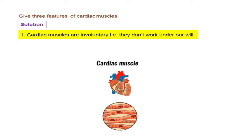Now the functions or the features of the cardiac muscles are that they are involuntary. What does involuntary mean? That they do not work under our will. We cannot control when they are going to contract, when they are going to relax. So they are involuntary in nature.